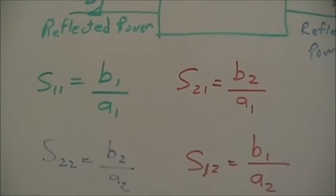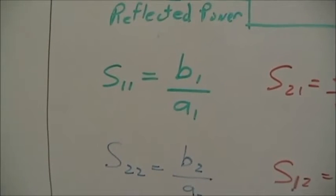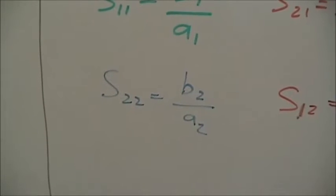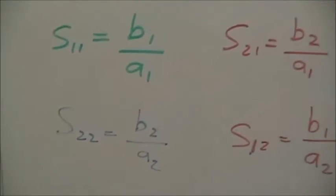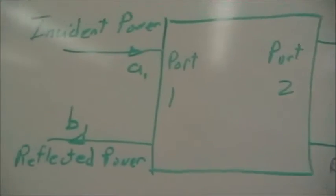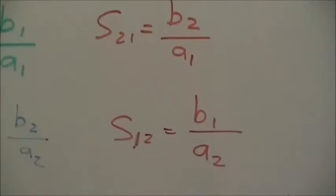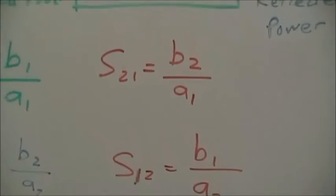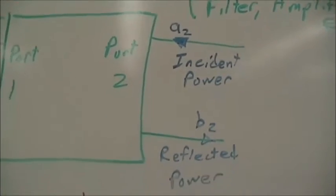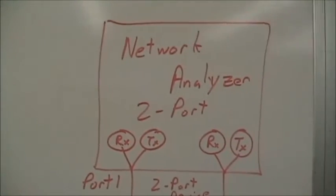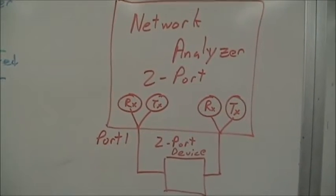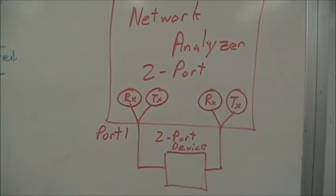That gives us four different S parameters for a two-port device. S11, the input reflection term, B1 over A1. S22, the output reflection term, B2 over A2. The forward transmission component, the output of port 2 over the input of port 1. And S12, which is the output of port 1 over the input from port 2. A network analyzer has two transmitters and two receivers, one on each port. That's where the A1 and B1, A2, B2 terms come from.